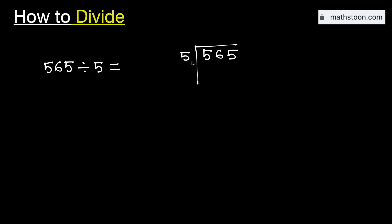Consider the first digit 5. We know that 5 times 1 is 5. Subtract, we get 0.